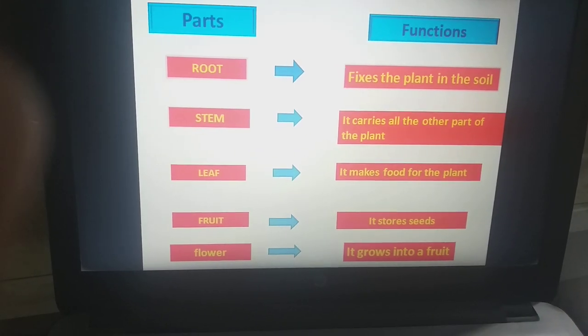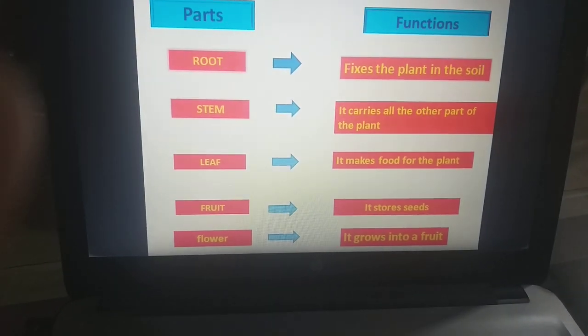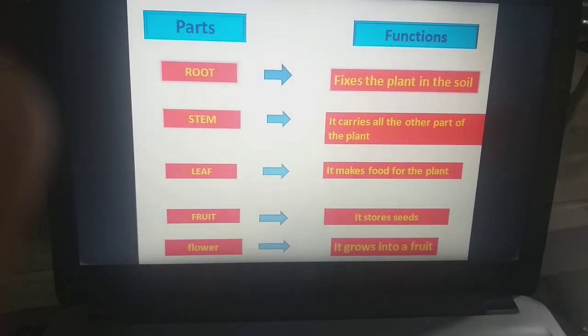So these are some parts like root, stem, leaf, fruit and flowers. And they are function.